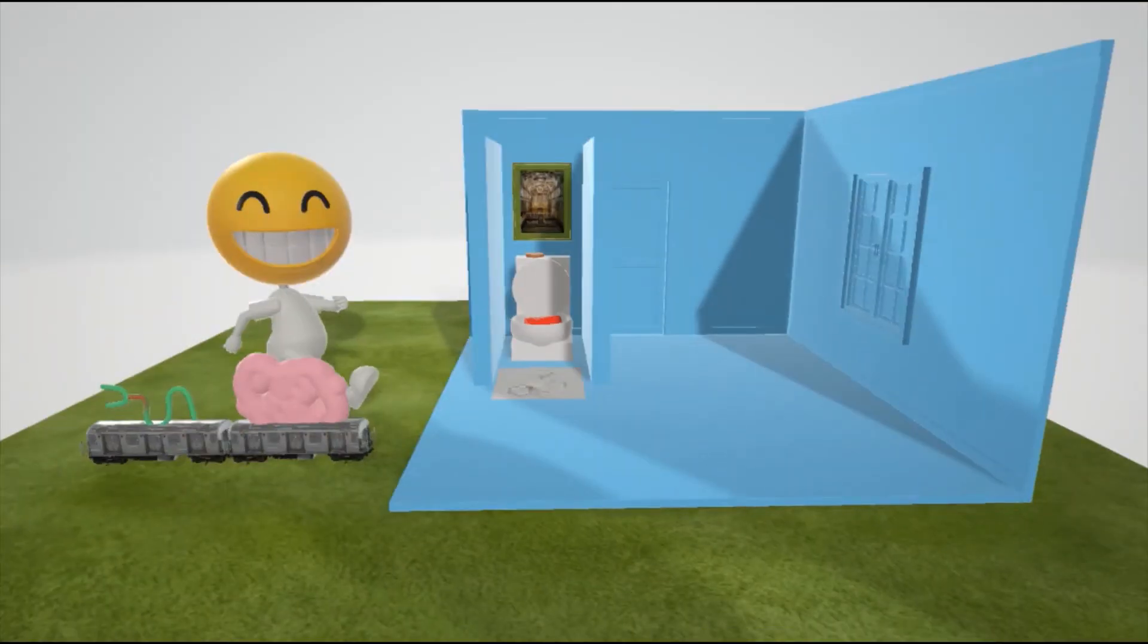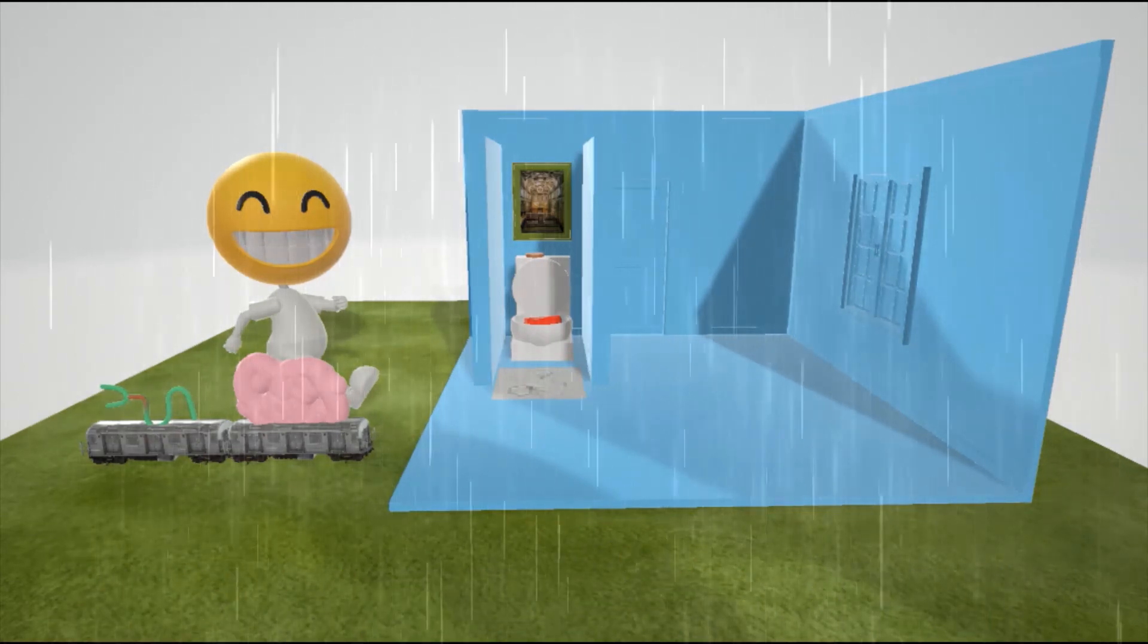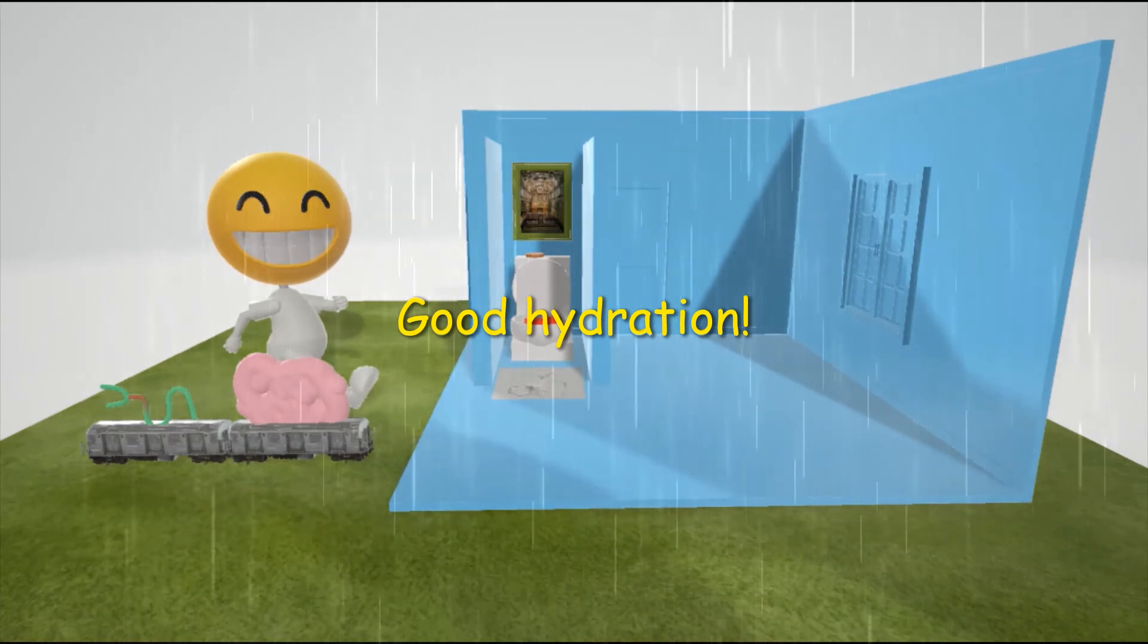Treatment for Cystinuria includes increasing solubility of the cysteine stones. Methods include urinary alkalinization through, for example, potassium citrate and acetazolamide, and chelating agents such as penicillamine to increase the solubility of cysteine stones. The reason why it's raining in this scene is to help us remember that good hydration is also important in treatment.